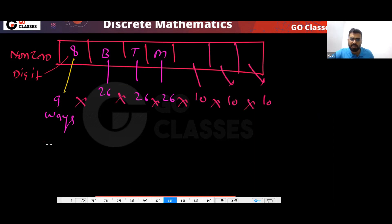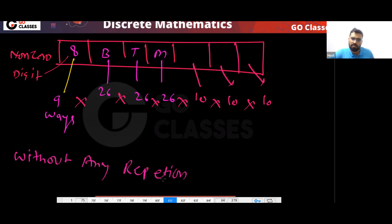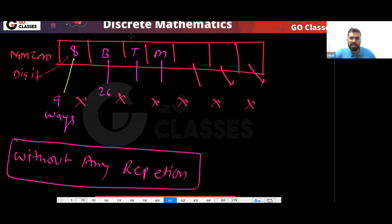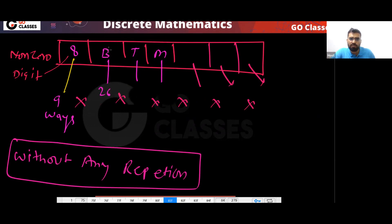Now the same question without repetition — what will be the answer? For the first position you have 9 ways. For the second position you have 26 ways, because these must be English characters. But once you put B here, you cannot put B again, so 25 ways and then 24 ways.